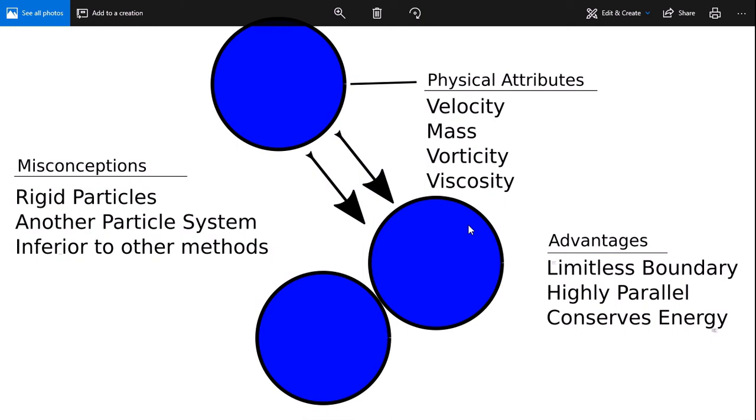And the last misconception about it is that it's inferior to other methods, mainly the FLIP simulation. Technically in the past it was, but a lot of researchers caught up now and the techniques are very much the same. In fact, what FLIP does is take its point of view and add particles to it. So it actually uses particles to represent its fluids, but it's not natural to FLIP, of course. But for smooth particle hydrodynamics, it's natural.